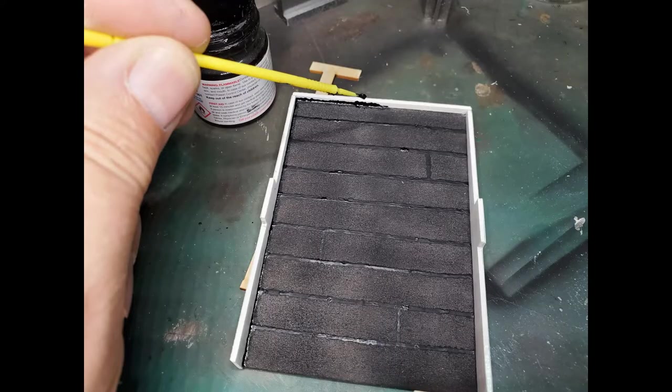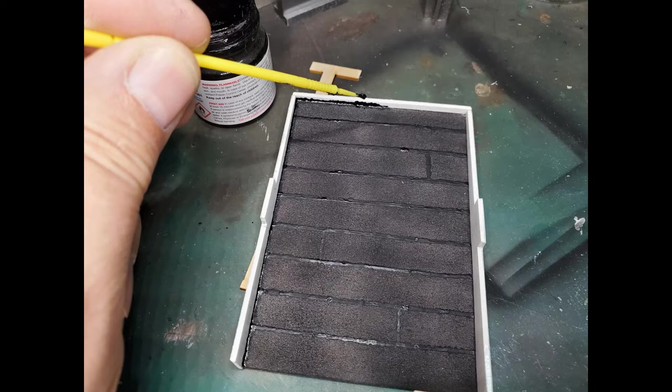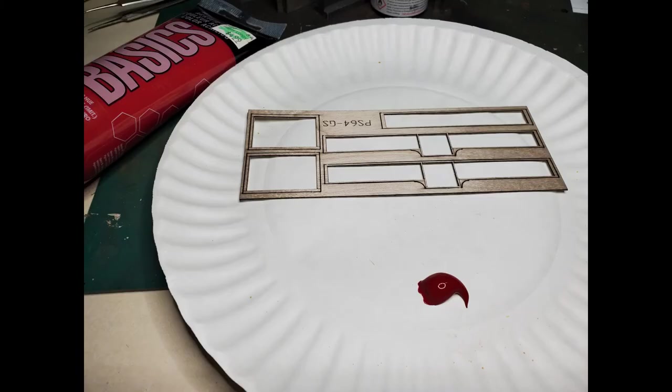I added tar to the edges of the roofing using a micro brush and the same Tamiya black acrylic paint.